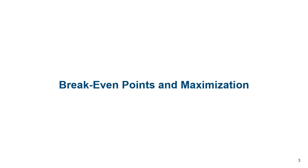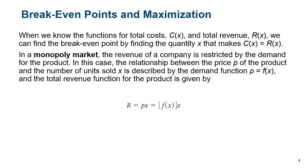So first, let's look at break-even points and maximizations. We know that functions for cost, revenue, and then we also know that if we want to find a break-even point, we need to figure out when that cost function equals that revenue function. Well, in a monopoly market, the revenue of a company is restricted by the demand for that product. In this case, the relationship between the price of said product and the number of things sold is described by the demand function, which we just call P.